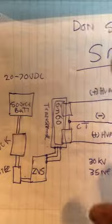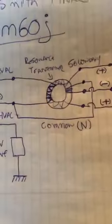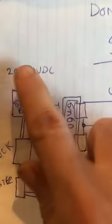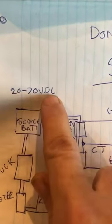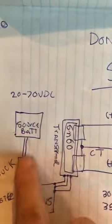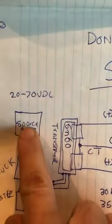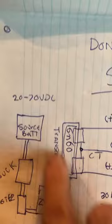So, here's the design, the complete design, the finalized design. These are my production models. And I'm going to explain every detail to you. So, let's go at it. The input is 20 to 70 volts DC from a source battery. I don't care what your source is. It could even be a solar panel. 20 to 70 volts DC.